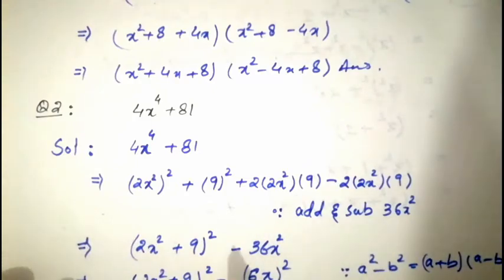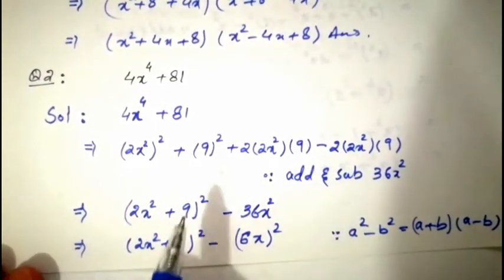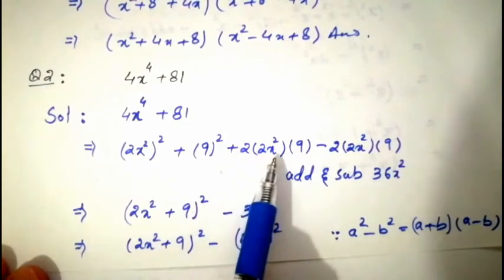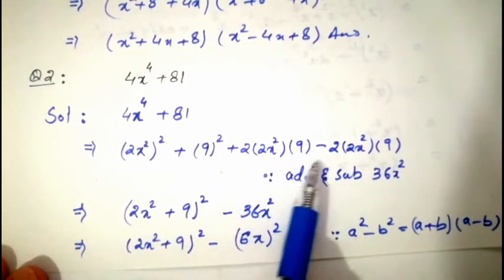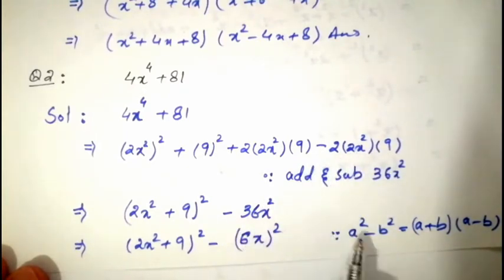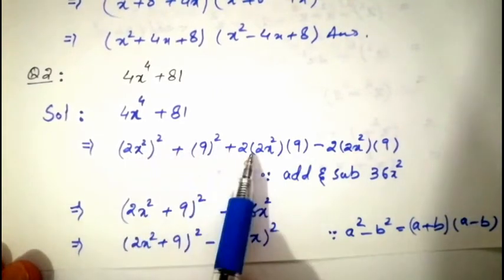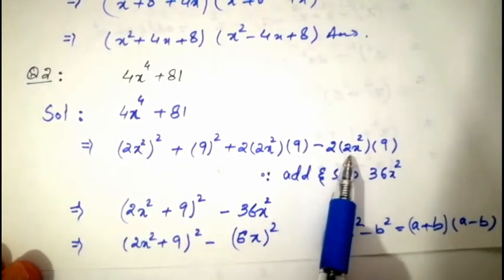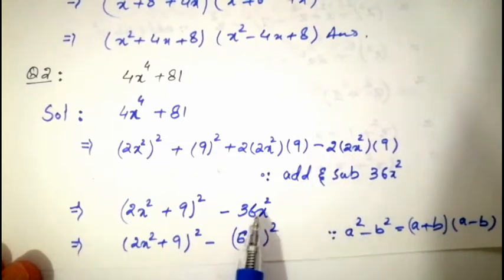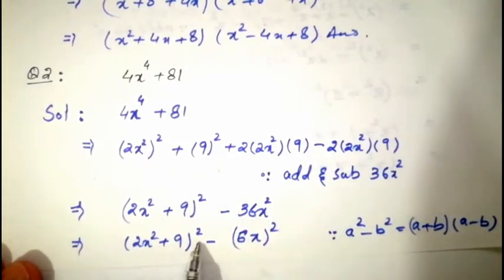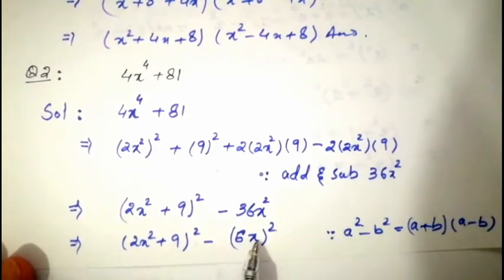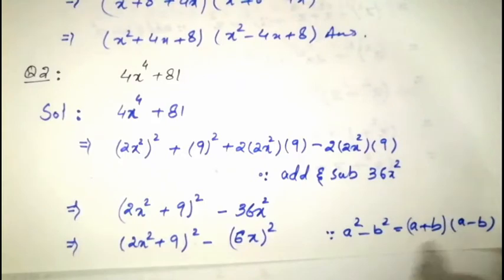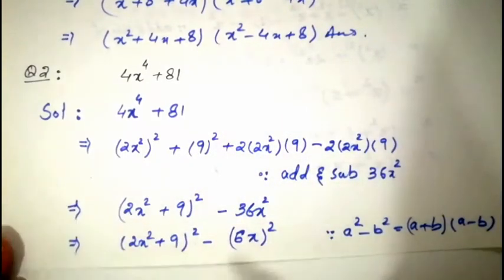After this the question becomes simple. Up to the formula a² + b² + 2ab, remember to take the plus terms into the formula and leave the minus term separate — because on the minus term we will apply the a² − b² formula. So the formula becomes (2x² + 9)² − (6x)², then we apply a² − b² = (a + b)(a − b).